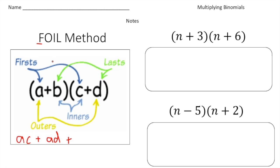I stands for Inside, or the inners — so now we're talking about the inside of the house. B times C is BC. And then L stands for Last; the last terms are B and D, so B times D is BD. That's the process of how to multiply two binomials.